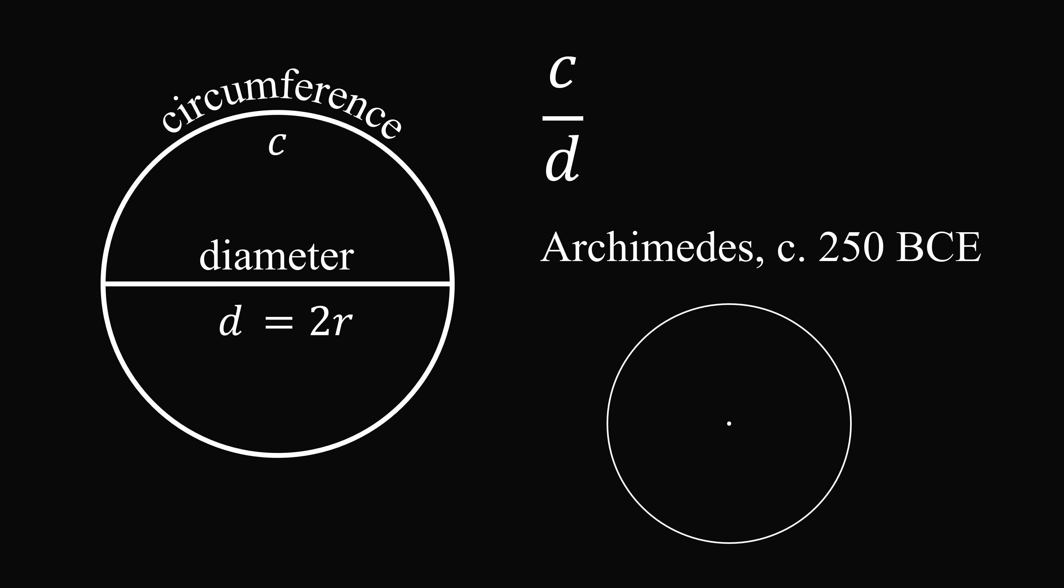And what he did is he thought about estimating the length of the circumference by overestimating it with a circumscribed polygon and underestimating it with an inscribed polygon. He used a 96-sided polygon and came up with the estimate that pi was approximately 3.14.